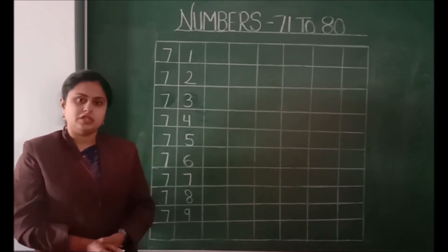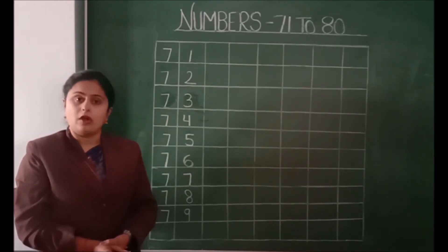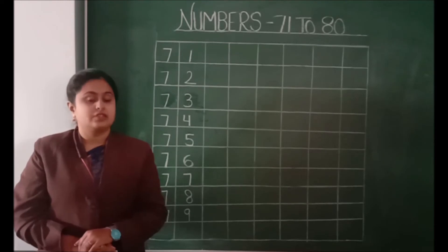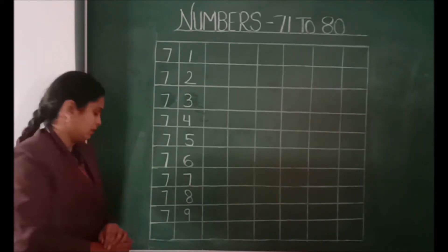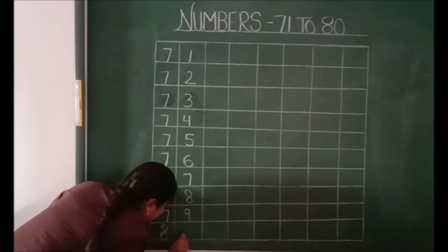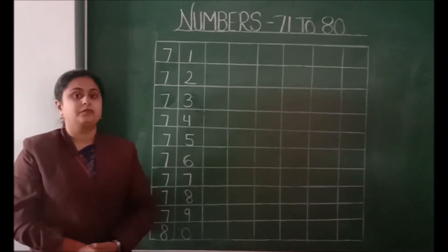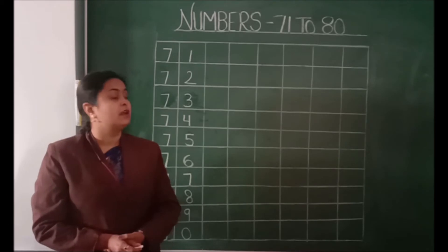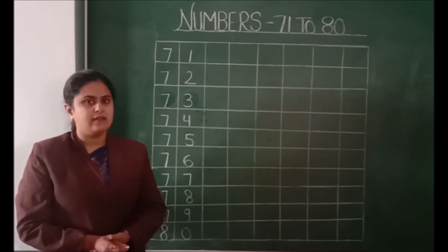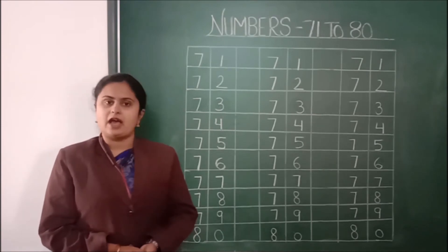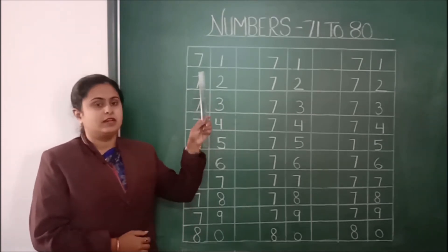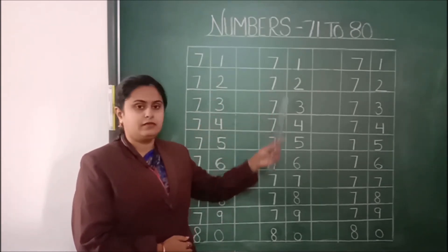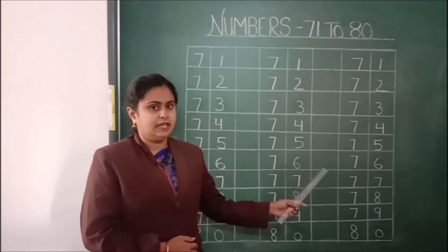Children, after number 79 what will come? Do you know? Yes, 80. So children, this is your numbers from 71 to 80. In this way you have to write numbers in your copy. First you will write numbers from 71 to 80, then leave one box, again write numbers from 71 to 80, again leave one box.